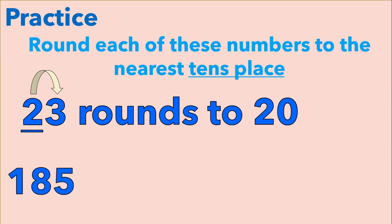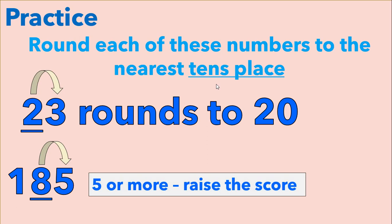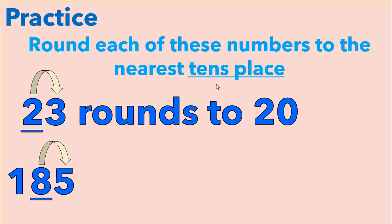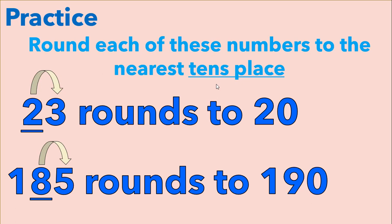Here we have one hundred eighty-five. The eight is in the tens place. Remember, we're rounding to the tens place, that's why we're looking at the eight. We're going to look at the five to determine if we're going to round one hundred eighty-five to one hundred eighty or to one hundred ninety. Remember, the five is in the ones place, and five or more means we're going to raise the score. So we're going to raise the eight tens to nine tens, which means one hundred eighty-five rounds to one hundred ninety.